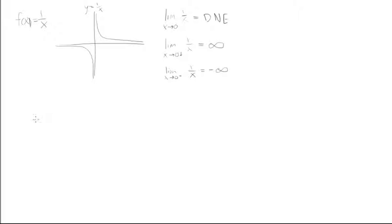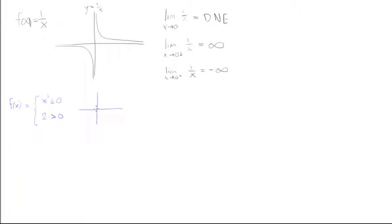Let's look at another example with a piecewise function: f(x) = x² for x ≤ 0, and f(x) = 2 for x > 0. A quick graph would show the x² parabola including the point at 0, going up from the left, and a constant horizontal line at y = 2 going off to the right.